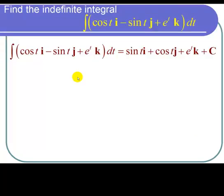So we get that this integral is equal to the sine of ti plus the cosine of tj plus e to the tk. And then since this is an indefinite integral, we have to do plus C.